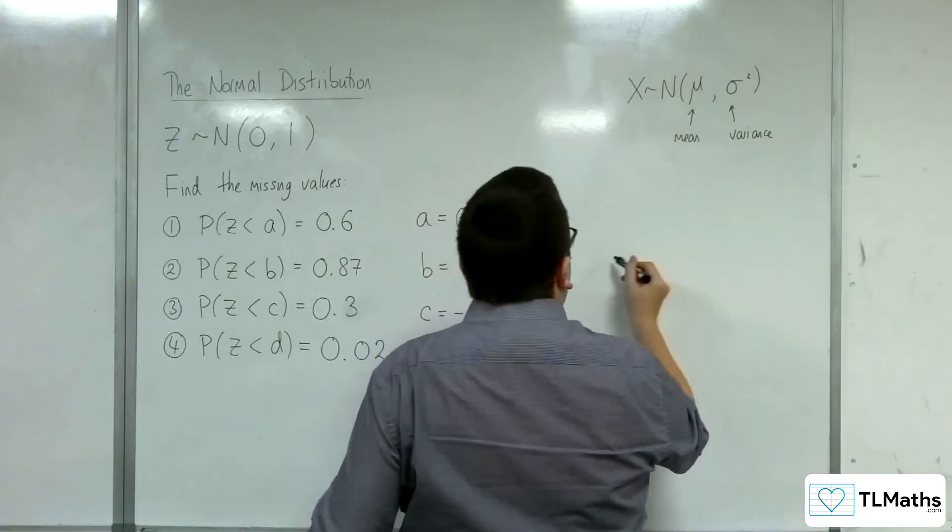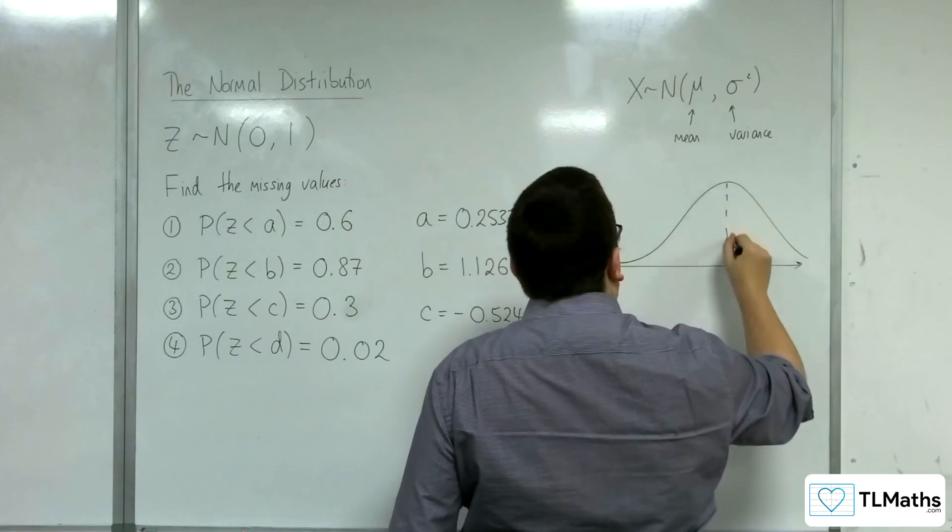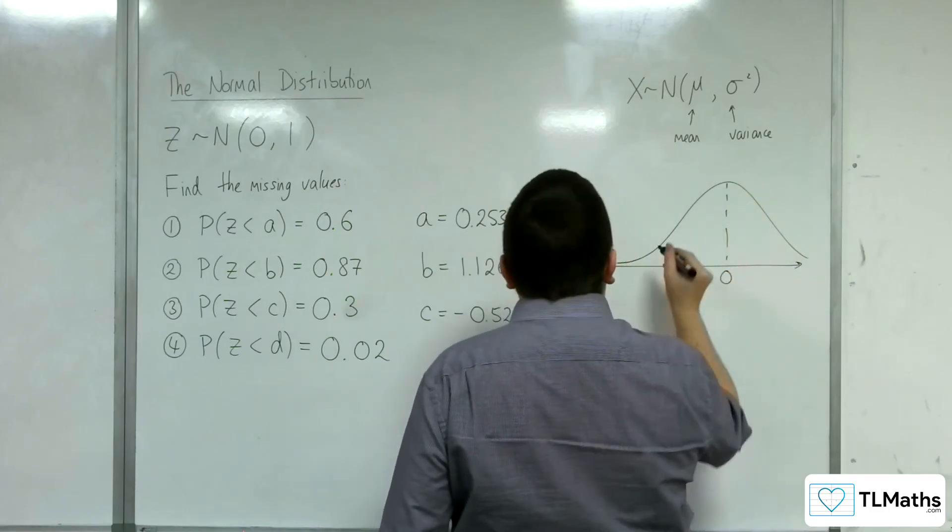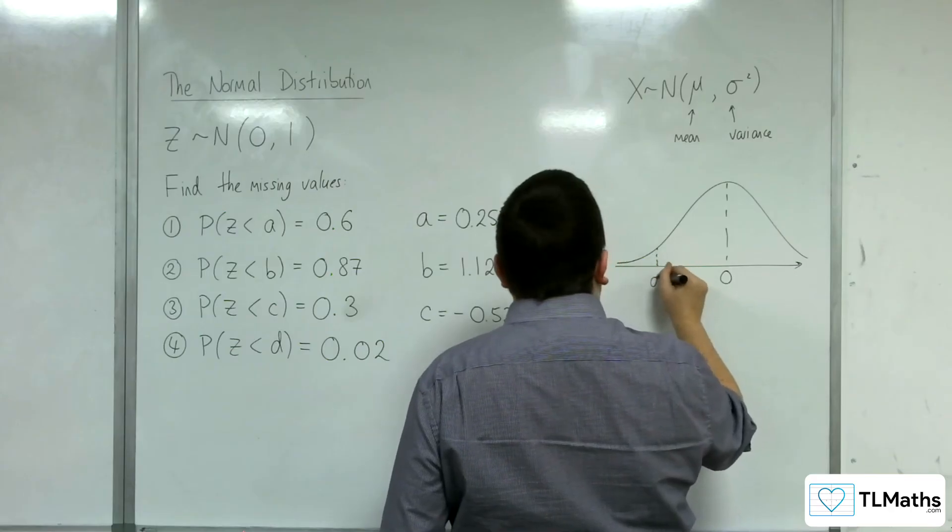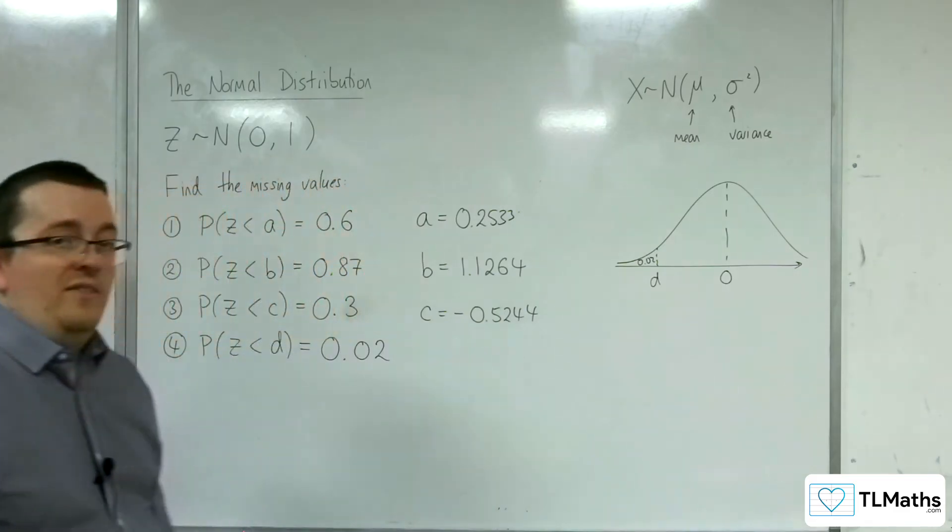So, finding number 4. Similar situation. So, D is somewhere along here, so that to the left is a probability of 0.02.